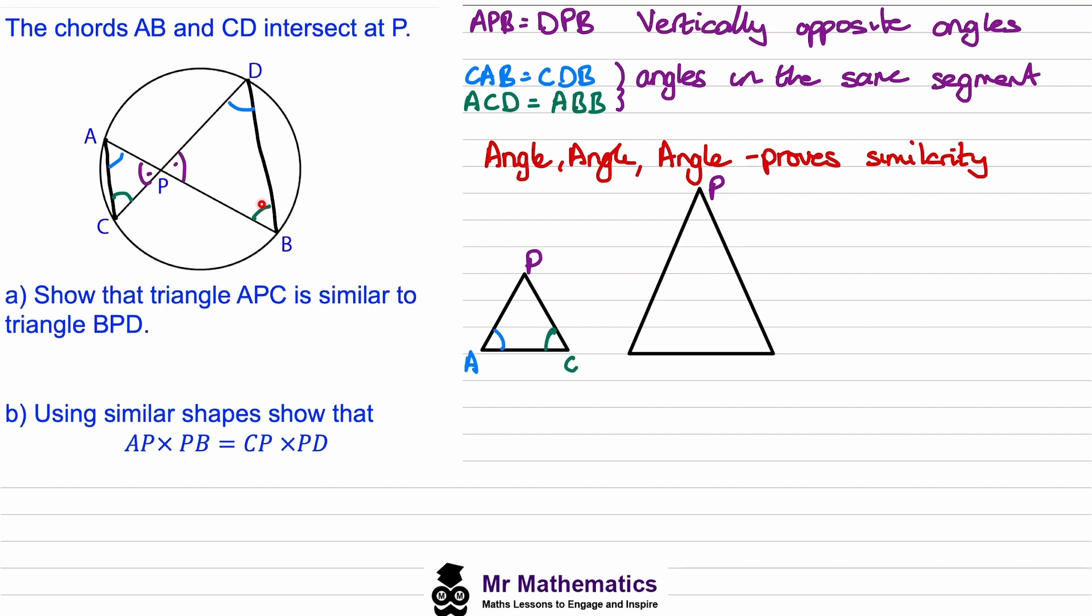we can rotate this bigger triangle to the right and then reflect it, and this will be angle D and this will be angle B. Okay, so because the two triangles are similar, we know if we multiply each